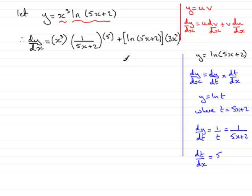So all I need to do now is just tidy each of the terms up. So if we start with the first term we've got 5 times the x cubed so that's 5x cubed all over 5x plus 2.